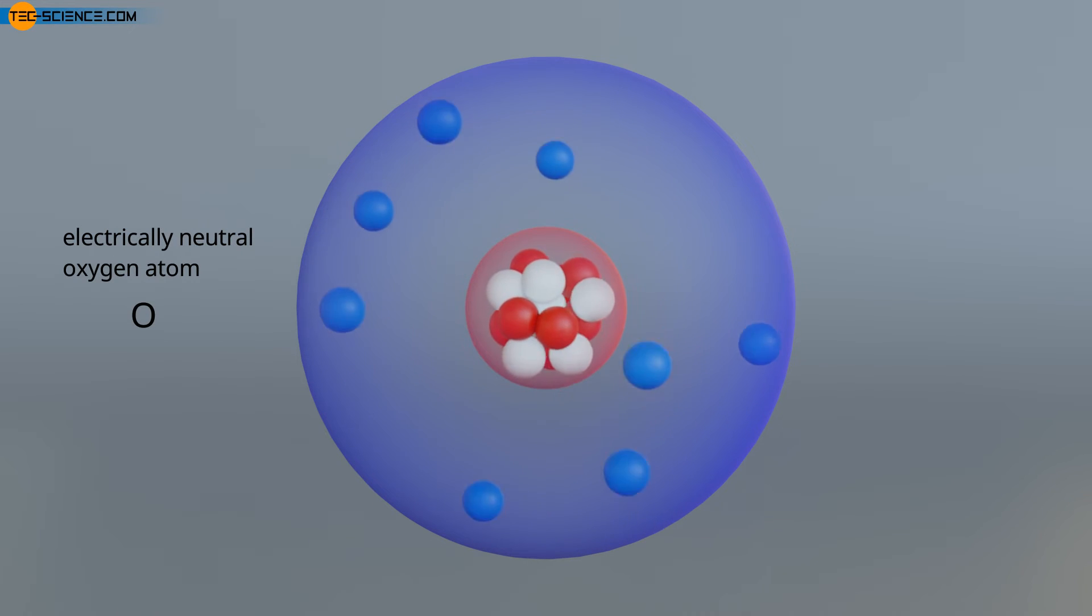However, if this neutral state is disturbed by absorbing or removing electrons, the atom is called an ion. The process of adding or removing electrons is called ionization.